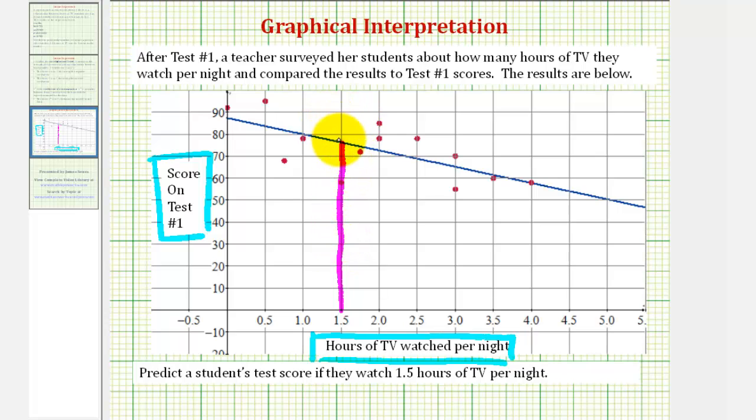And then once we're on the line, we'll go straight to the y-axis to make our prediction. So it looks like it's more than 75, but obviously less than 80, and closer to 75 than 80. So we'll make a prediction of 76.